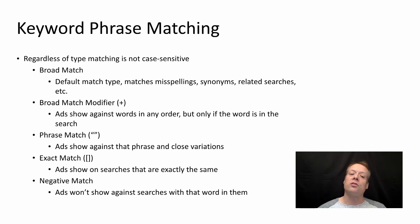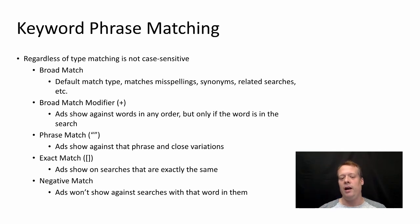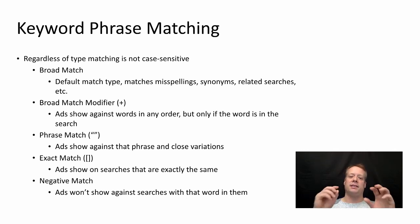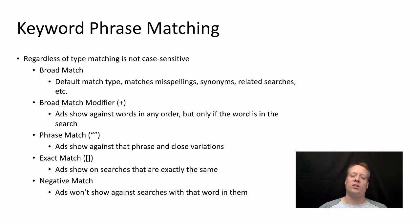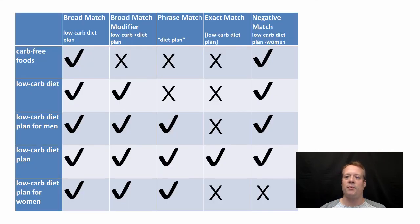You can also do a phrase match, where you put quotes around the phrase, and Google will match against searches that are like that phrase or very similar. You can do an exact match, which says you only want to match against exactly those phrases. And you can do a negative match, which says you don't want your ad shown against searches that include a specific word. That's kind of complex, so let's talk through some examples.